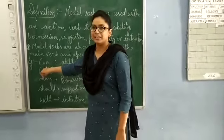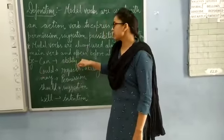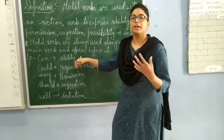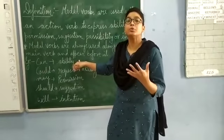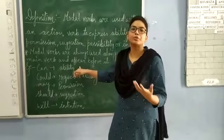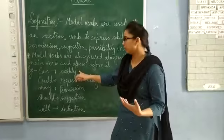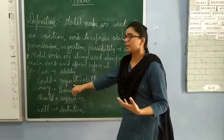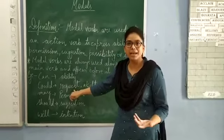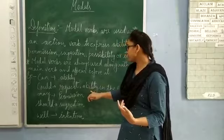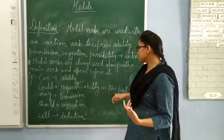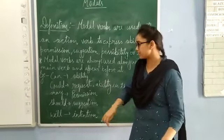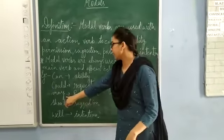The first example is 'can', which shows ability — what you can do or cannot do. 'Could' shows request, like 'Could you help me?', as well as ability in the past, like 'I could do that in the past.'